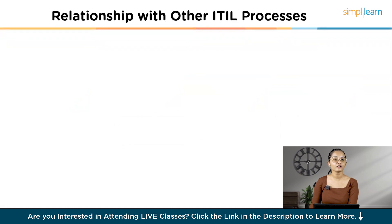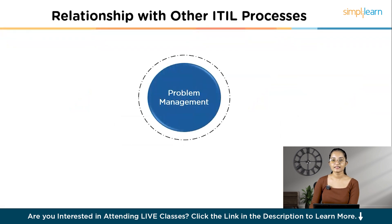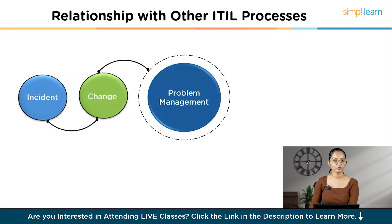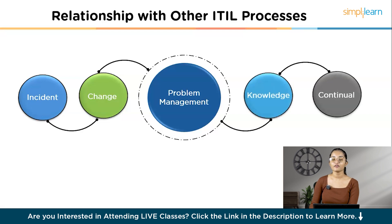Problem management doesn't operate on its own — it's closely linked to other ITIL processes. Incident Management: incidents often lead to problem identification. Change Management: resolving problems might require changes to IT infrastructure or services. Knowledge Management: the knowledge base stores information about known errors and solutions. Continual Improvement: problem management aims to identify areas for process optimization.